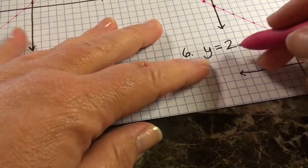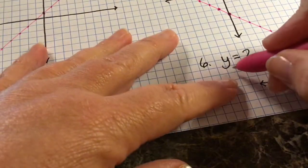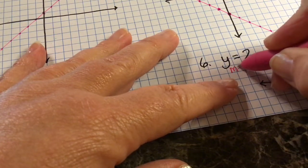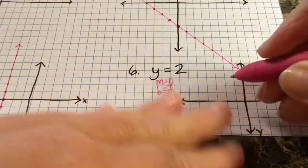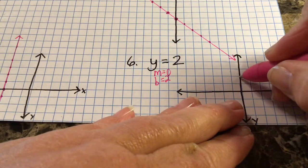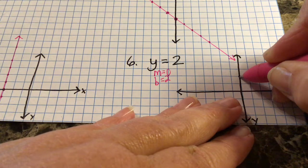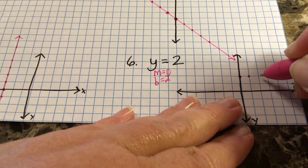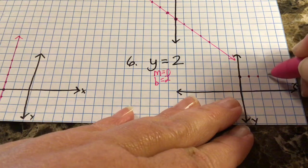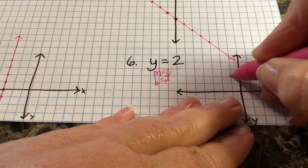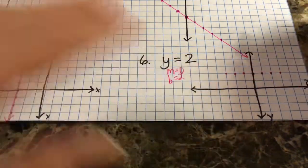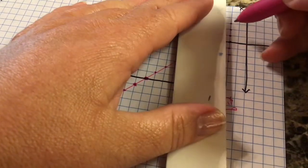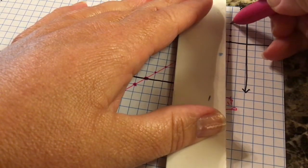For number six, we can say this is in slope-intercept form because the slope is zero — there's no x — and the y-intercept is two. Go to two on the y-axis and rise none, run one to the right. When you just have a y without an x, that is a horizontal line with a slope of zero.